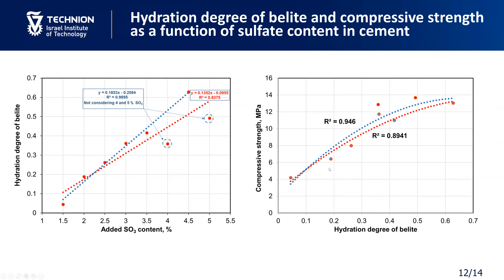In this slide you can see two graphs. The left graph shows the dependence of hydration degree of belite on the amount of sulfates. The hydration degree of belite can be easily calculated knowing the amount of belite in cement before hydration and the amount of belite in hydrated paste for each sulfate content. As can be seen, when 2%, 4%, and 5% of sulfate are considered, this dependence is directly proportional — an increased sulfate content leads to an almost linear increase in hydration degree. A similar trend is seen in the right graph showing dependence of strength on hydration degree of belite: with increasing degree of hydration, strength also increases.